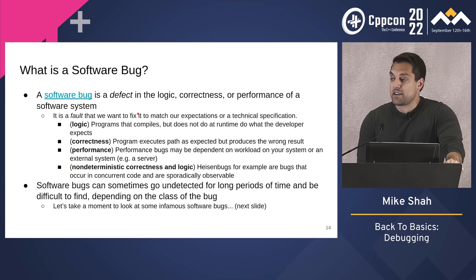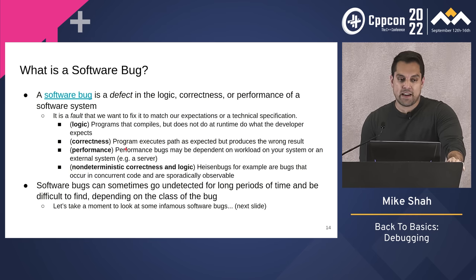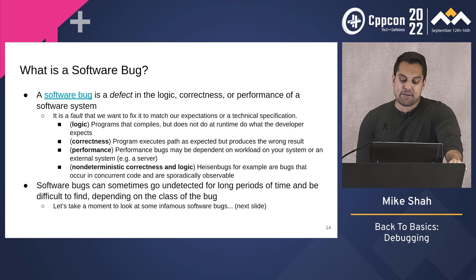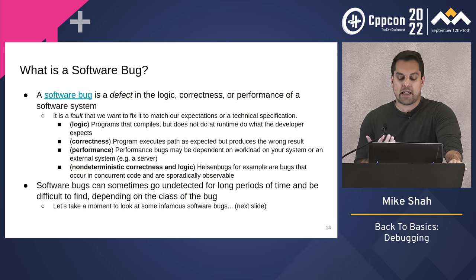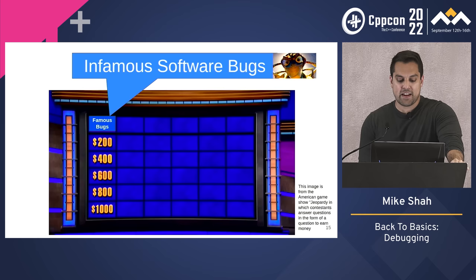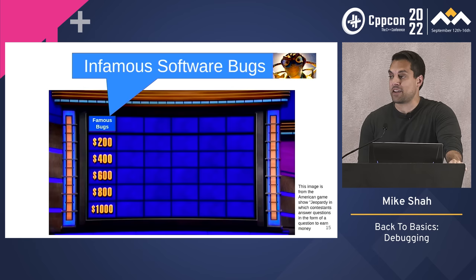Software bugs are faults or defects in our programs. One of the issues is they can go undetected for a long period of time, and can be difficult to find based on the class of the bug. To motivate that, here are some infamous software bugs that I think everybody should be familiar with — to motivate debugging for yourself or maybe your team members.